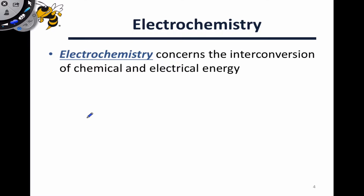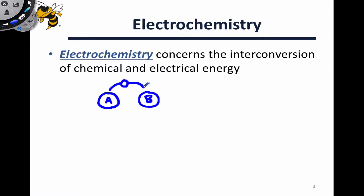Electrochemistry concerns the interconversion of chemical and electrical energy. Primarily, electrochemistry takes advantage of the fact that there are certain types of reactions where one species transfers electrons to another species. In these reactions, it's literally one or more electrons moving from one atom or molecule to another. This movement of an electron can be channeled into electrical energy in the form of a voltage or a current flow.